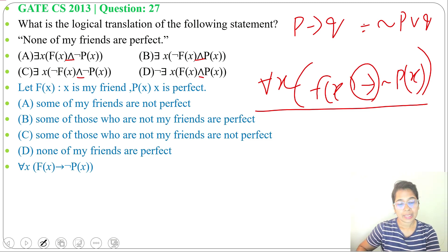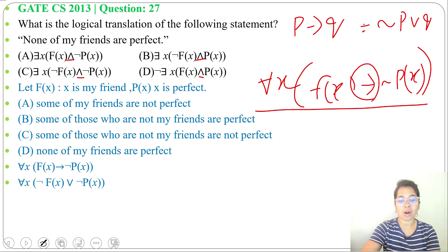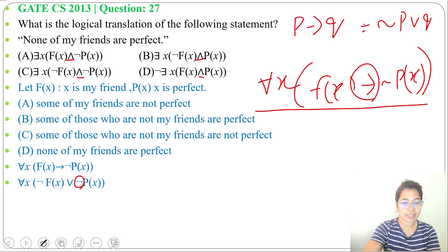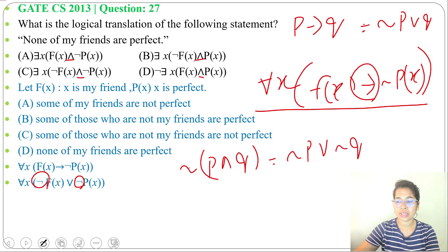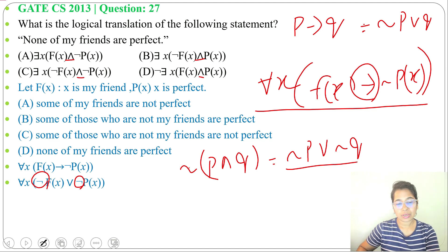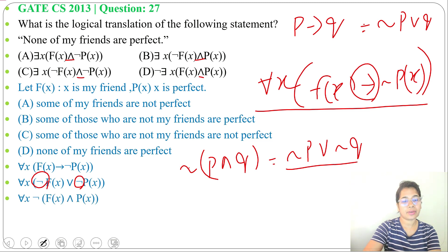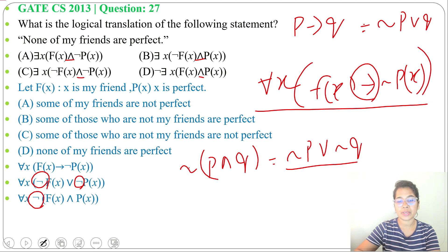So we write negation of f(x) or negation of p(x). Now we can take the negation common and apply De Morgan's law. De Morgan's law states: negation of (p and q) equals negation p or negation q. So when we take the negation common, it becomes AND — giving us negation of f(x) and p(x), taking negation common from both f(x) and p(x).